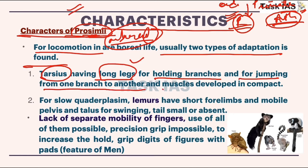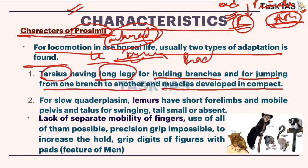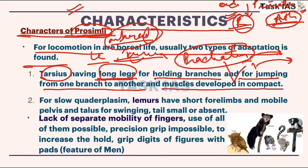Prosimians, lemurs, and tarsiers are mostly arboreal, and for their locomotion brachiation is used. For that purpose they have to move and jump from one branch of a tree to the next branch, or sometimes from one tree to the next. For this purpose they have long legs so that this movement can be longer.